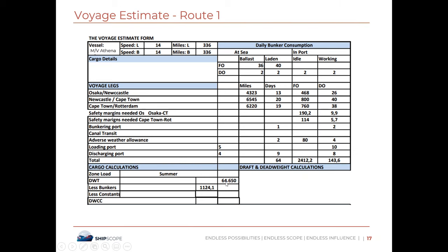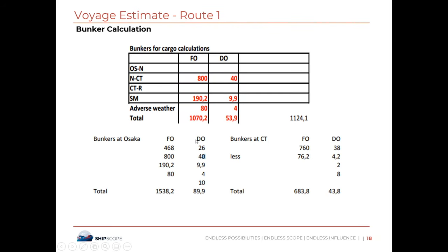For the cargo quantity calculation: bunkers from Newcastle to Cape Town = 800 tons FO, 40 tons DO; safety margin 190.2 and 9.2 tons; adverse weather contribution makes total FO for cargo calculation 1,070.2 tons and DO 53.9 tons — total bunkers for cargo calc: 1,124.1 tons. Deadweight available: 64,650 minus bunkers (1,124.1 tons) minus constants (500 tons) = cargo carrying capacity of 63,026 tons at Newcastle.